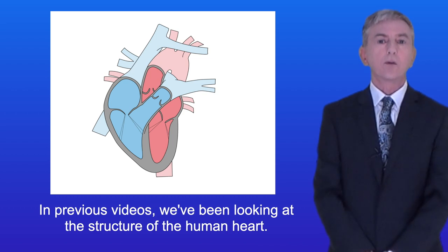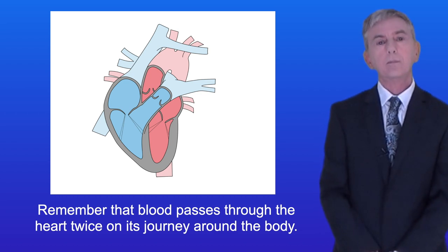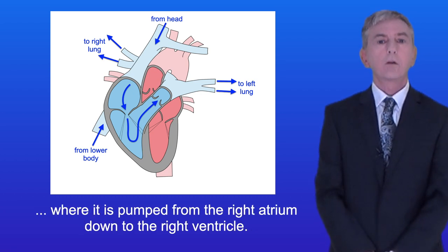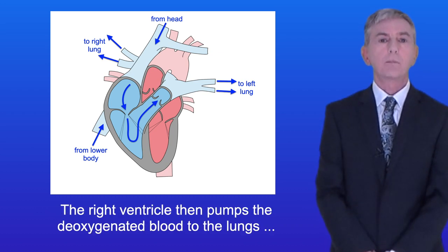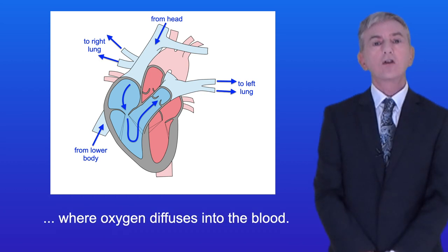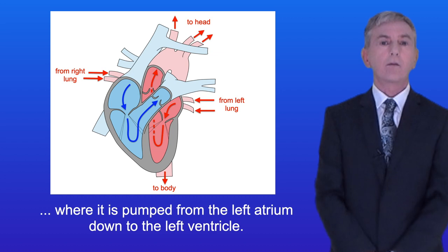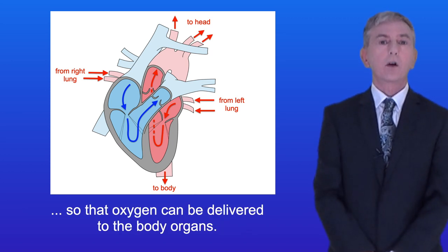In previous videos we've been looking at the structure of the human heart. Remember that blood passes through the heart twice on its journey around the body. Deoxygenated blood from the body enters the right side of the heart, where it's pumped from the right atrium down to the right ventricle. The right ventricle then pumps the deoxygenated blood to the lungs, where oxygen diffuses into the blood. The oxygenated blood now returns to the left side of the heart, where it's pumped from the left atrium down to the left ventricle. The left ventricle now pumps the oxygenated blood around the whole body, so that oxygen can be delivered to the body organs.